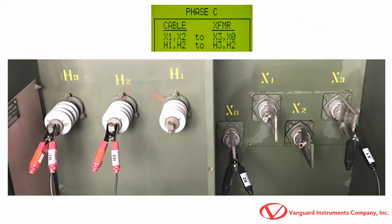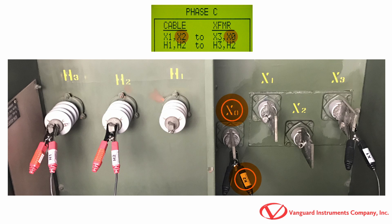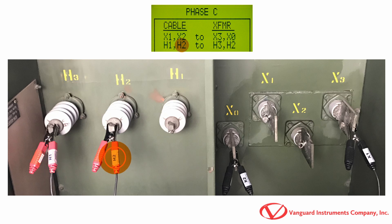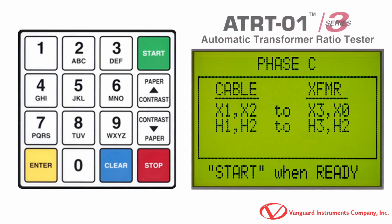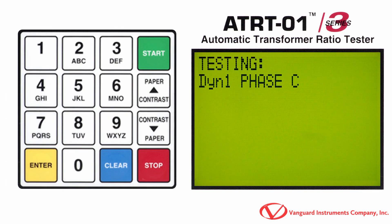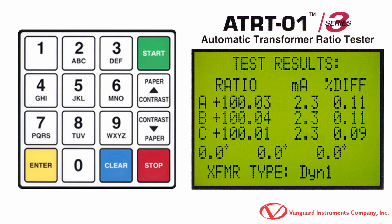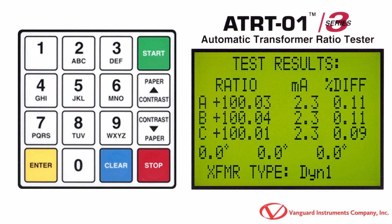Now we'll make the connections for testing phase C as shown on the screen. We'll connect the unit's X1 cable to the transformer's X3 terminal and the unit's X2 cable to the transformer's X0 terminal. Then we'll connect the unit's H1 cable to the transformer's H3 terminal and the unit's H2 cable to the transformer's H2 terminal. Press the Start key to run the test. After a few seconds, the test results for phase C will be displayed below the phase A and B results. Also, the phase angles for phase A, B, and C are displayed at the bottom of the test results from left to right respectively. 0 or 360 degrees indicates in-phase while 180 degrees indicates out-of-phase. Review your test results and then press any key to continue.